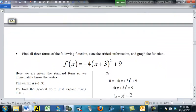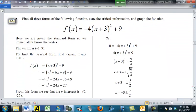Alright, let's do the next one. Go another direction here. Let's suppose this time we start with the standard version. F of X equals negative 4 times X plus 3 square plus 9. In this version, we can see the vertex is negative 3, 9.